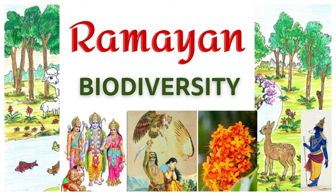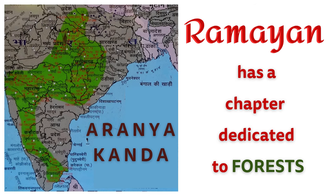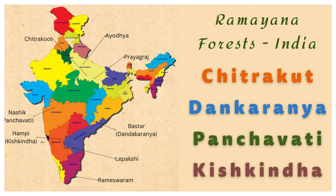In continuation of the Ramayana Biodiversity series, we bring you details about the forests mentioned in the Ramayana. The Ramayana has an entire chapter — a Kanda — dedicated to the forest, by the name Aranyakanda. The word Vanas means living in the forest. The entire journey of Lord Rama from Ayodhya to Lanka took place in the forest.